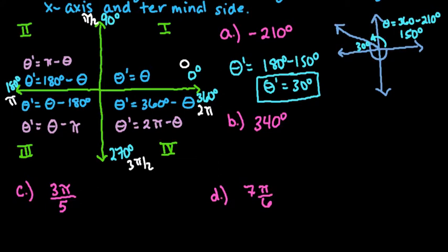Alright, so moving on to the next one. For 340 degrees, if we draw our picture, this time we don't have to worry about going the opposite direction. 340 degrees would put us over here because it's between 270 and 360.